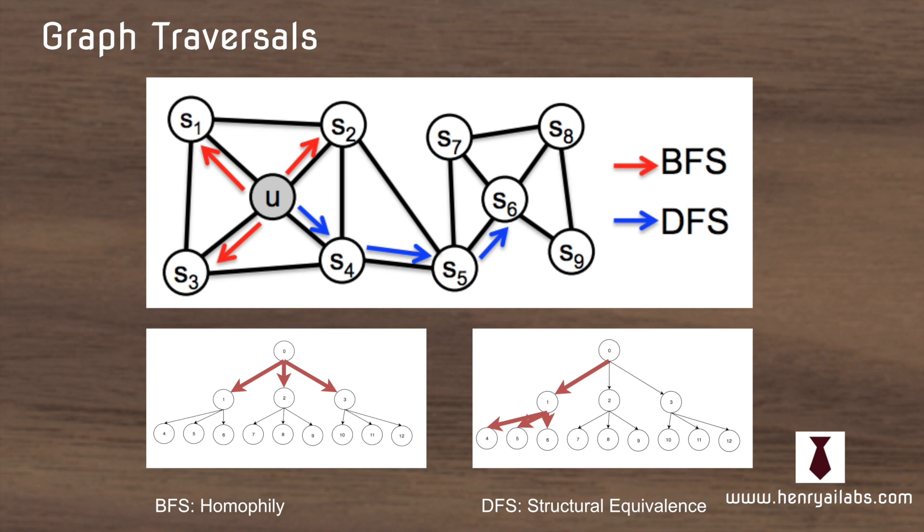But if you do a depth-first search traversal, then the nodes will have a structural equivalence in their embedding. So in the nodes in the graph above, U and S6 don't share any neighbors, but they both play a similar role in their communities.